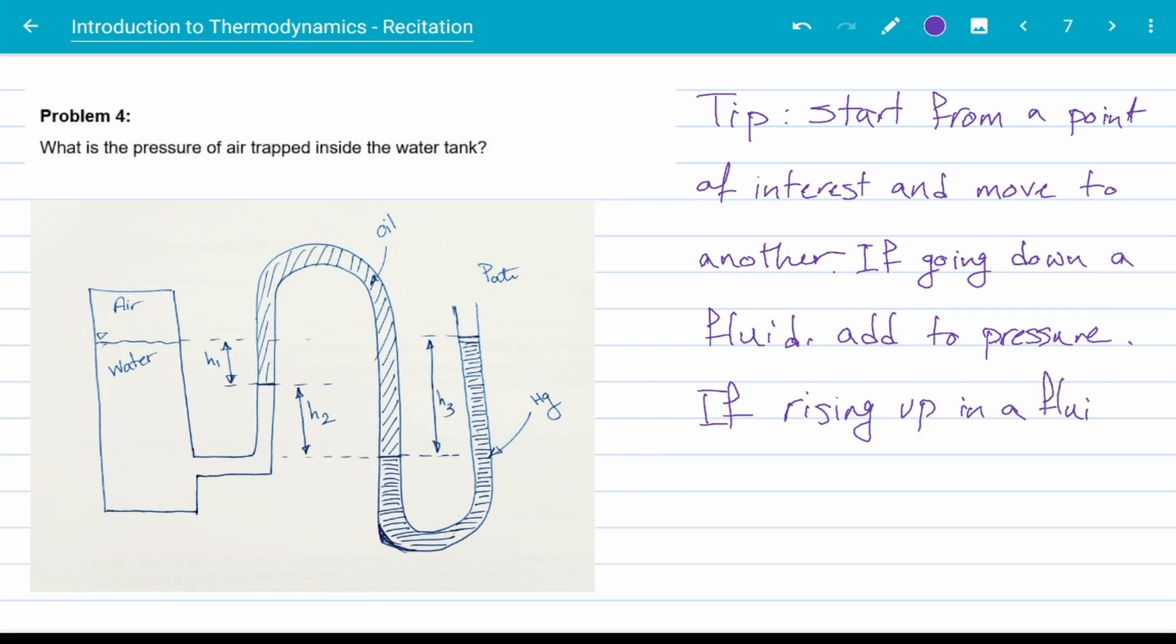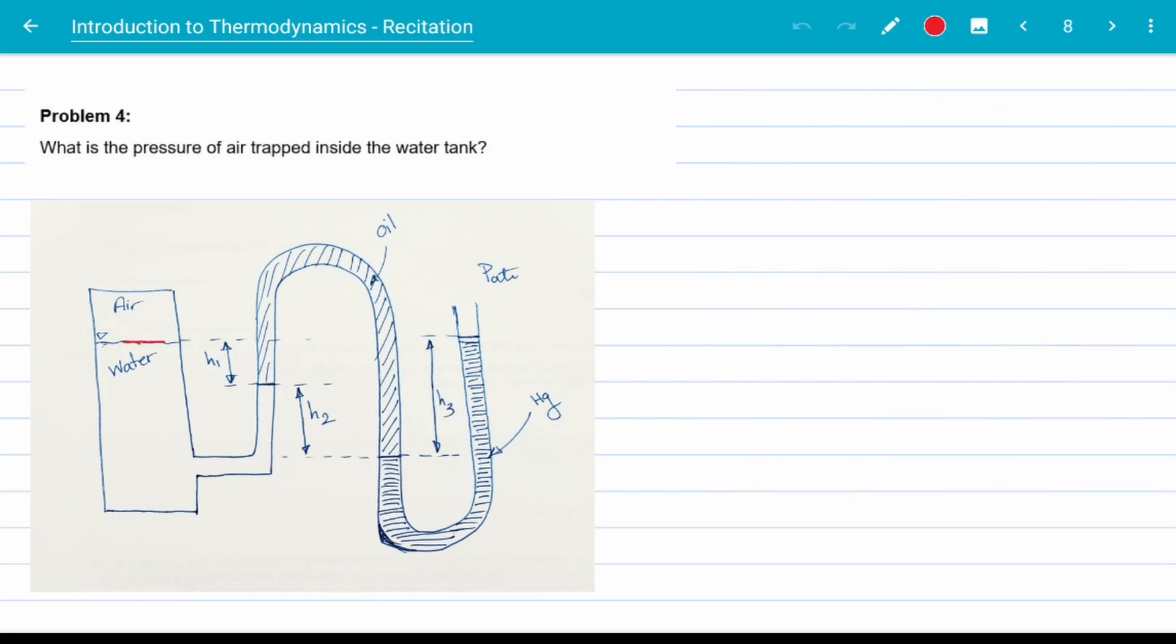If you're going down inside the fluid to get to the point of interest, we need to add the pressure. If we are going up and rising inside the fluid, we subtract from the pressure. Let's show that tip in action here. Point one is our first point of interest and point two is our final point of interest. Now let's start moving from one to water-oil interface. We're going down in water to reach a point with the same pressure, so we add the column of water to our pressure, like this.